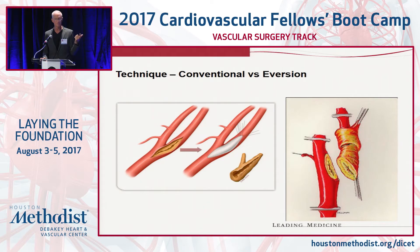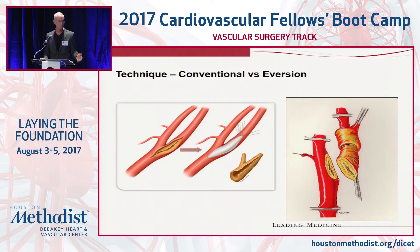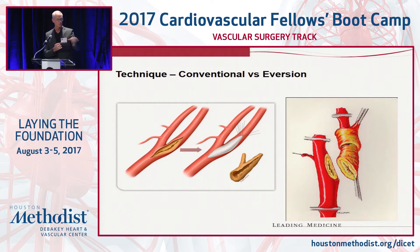Who's done an eversion endarterectomy? Eversion is handy in two situations. One is the woman with a small artery, because you don't have to patch — you're eliminating the patch up the ICA. The second place it's helpful is anytime you have redundancy in the ICA. By transecting it and re-implanting, it's pretty handy. If you bring your patch up close to a kink, it makes it worse, so in that setting you're better off just diverting.